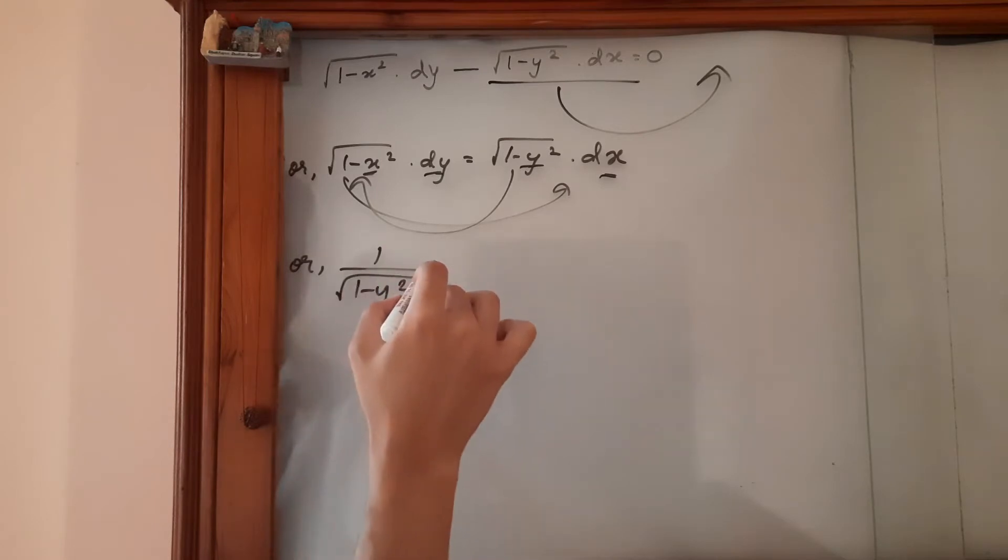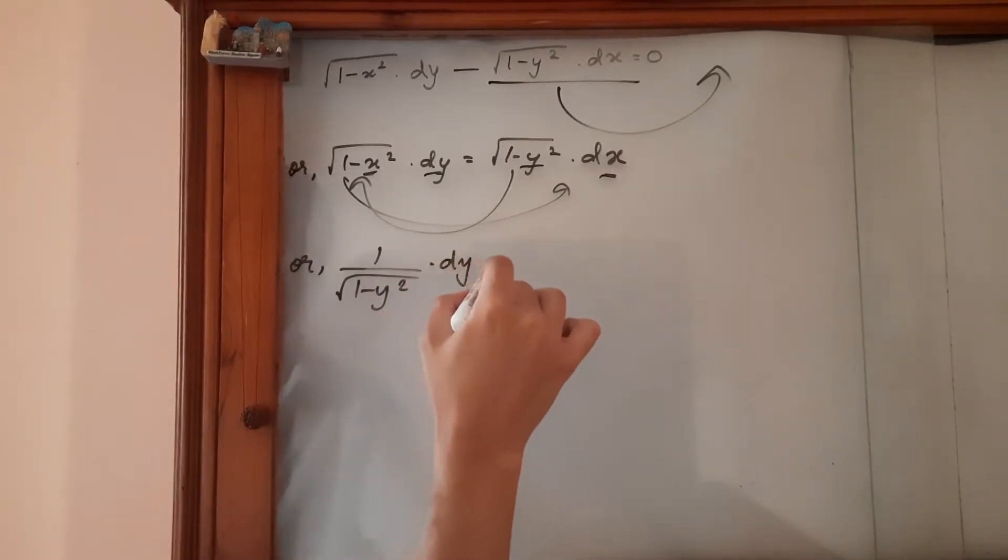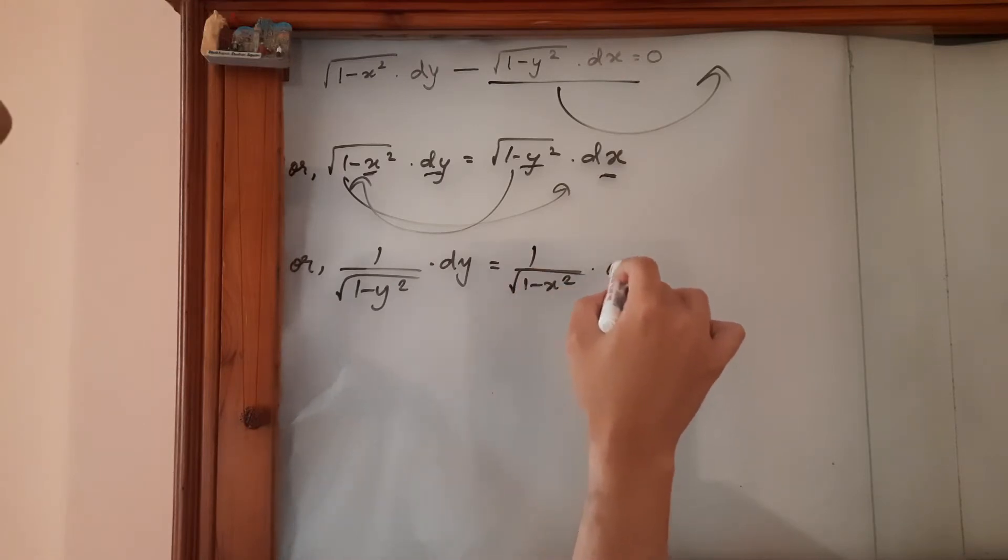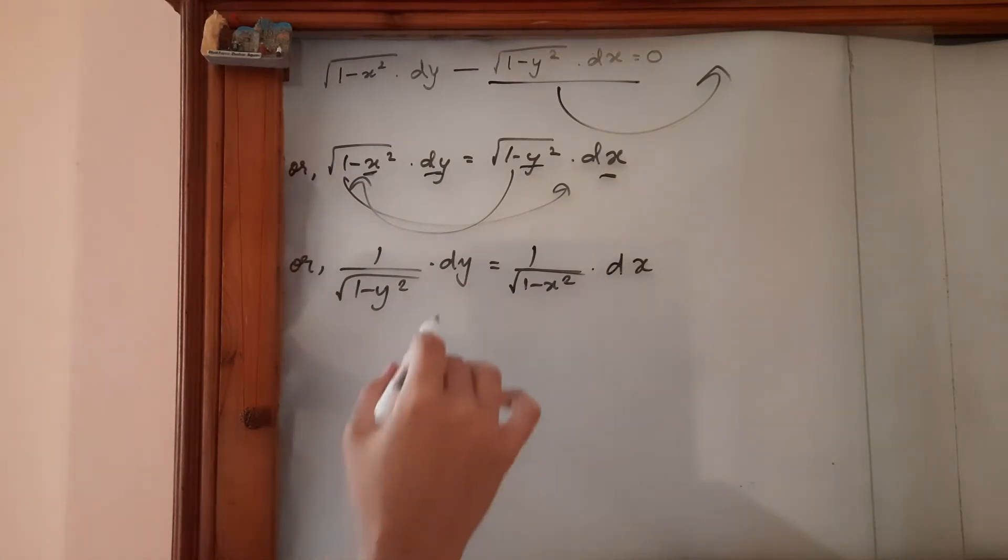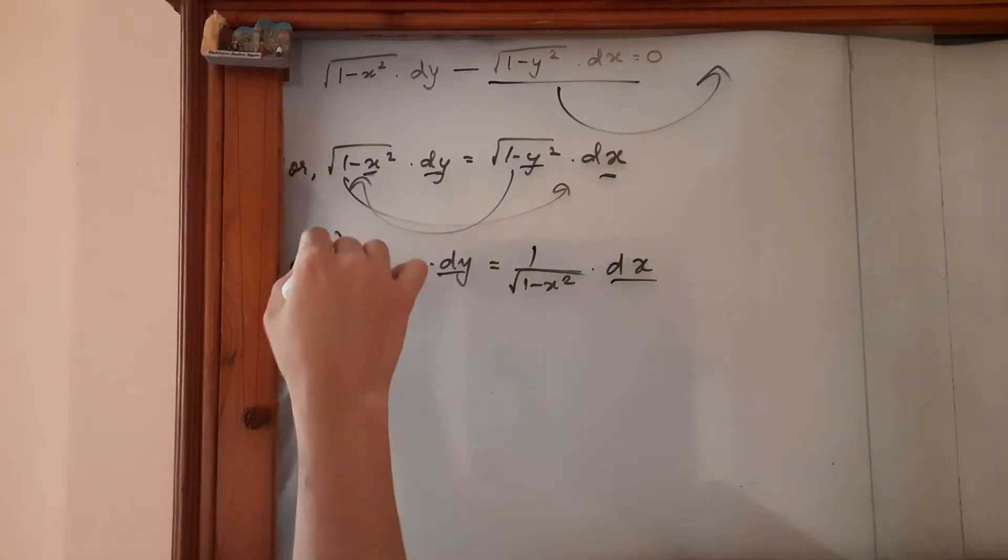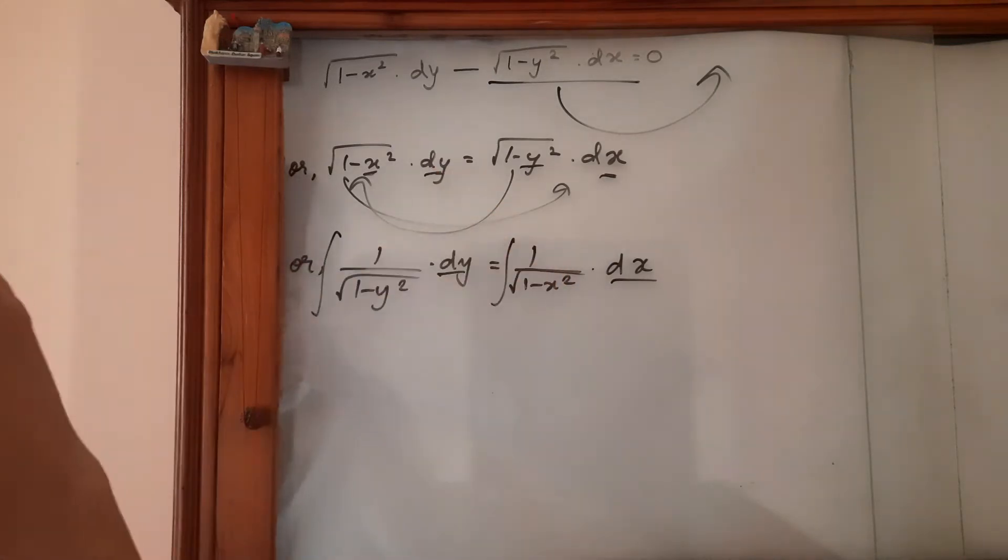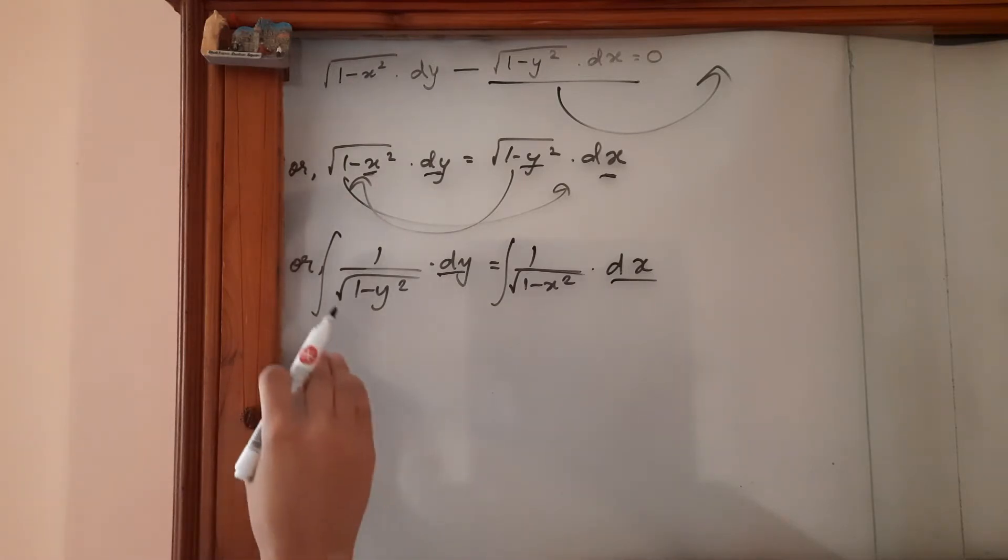This, and then there is a root sign over there, please take note of that, yes. Now in order to remove this dy and dx, what we can do is we can integrate both sides. So that way, my integration sign might not be very aesthetic, but then yes, let's work it out with that one.